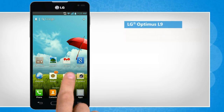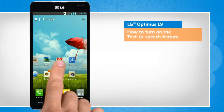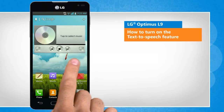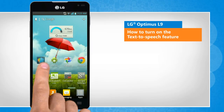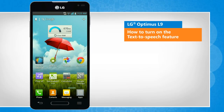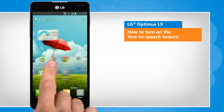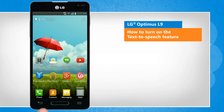Hi friends! The text-to-speech feature in your LG Optimus L9 smartphone powers applications to read the text on your phone screen aloud. Here's how you can turn on this feature on your LG phone.